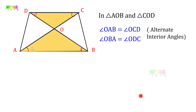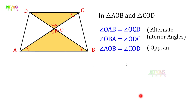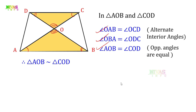Next, here we use angle AOB and angle COD. These two opposite angles are equal. When two lines intersect, if we use opposite angles, they are equal. So angle AOB equals angle COD. Reason: opposite angles are equal. So here we use three angles. Let's prove it. Triangle AOB is similar to triangle COD by AAA similarity of triangles.